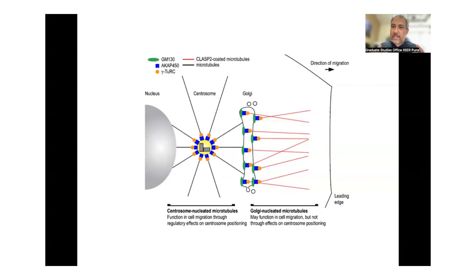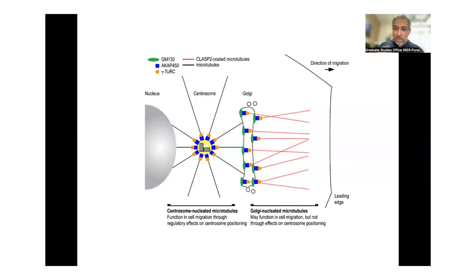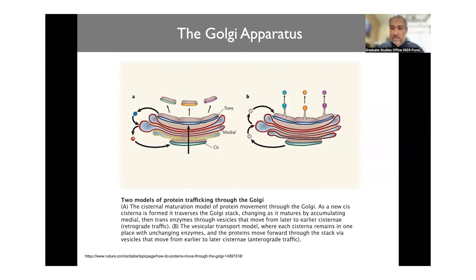Another very interesting facet about the Golgi discovered in the last five to ten years is that the Golgi sits around the centrosome where microtubules originate, but now there is enough evidence to suggest that the Golgi itself can also act as a place from which microtubules originate. There is a class of microtubules called Golgi-nucleated microtubules that originate from the Golgi. The Golgi was discovered many years ago, but this capability was only identified about five years ago — there could be other roles for the Golgi that we don't yet fully understand.